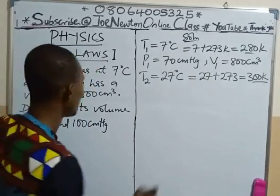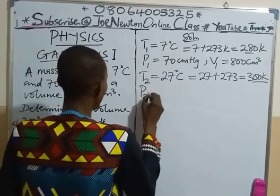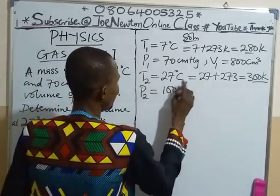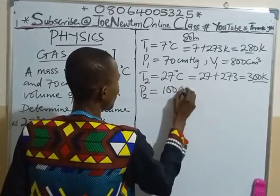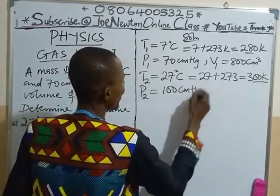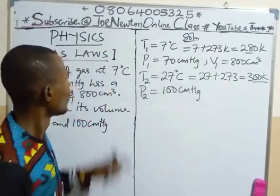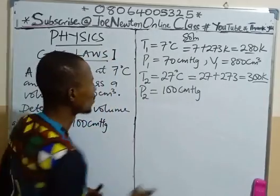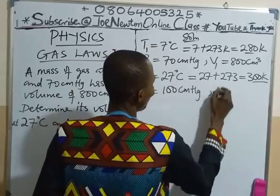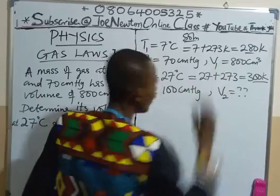Then we go to the pressure. We are given that P2 is equal to 100 centimeters of mercury — that's our final pressure. We are now expected to find the final volume, V2. V2 is our task here.